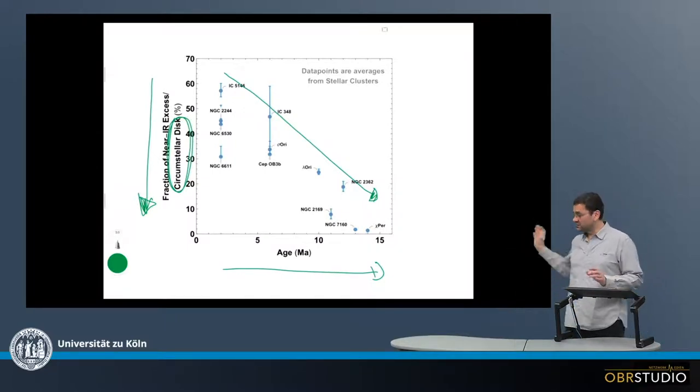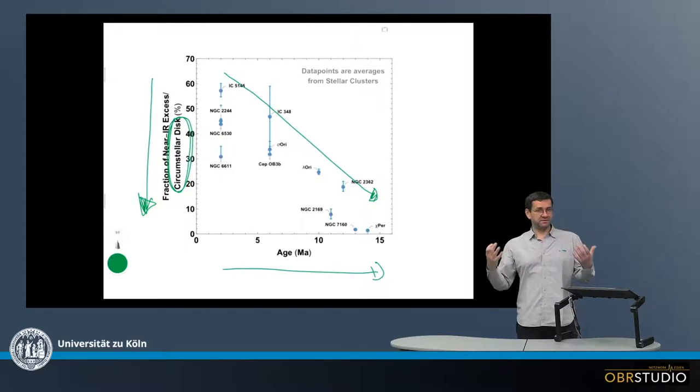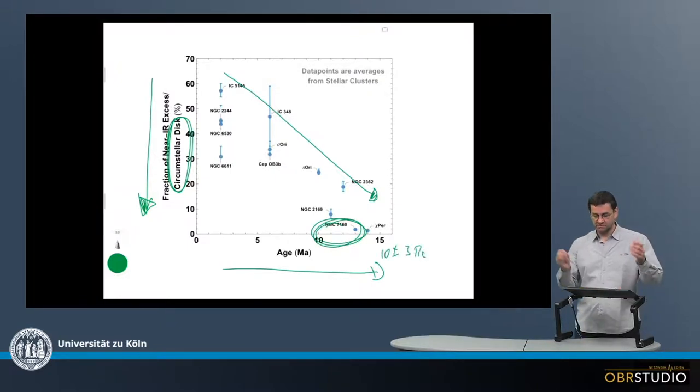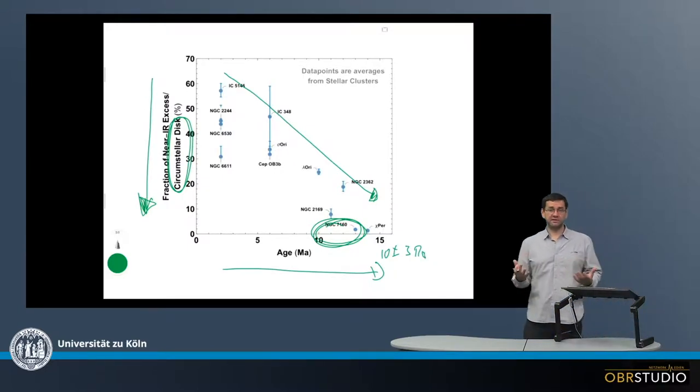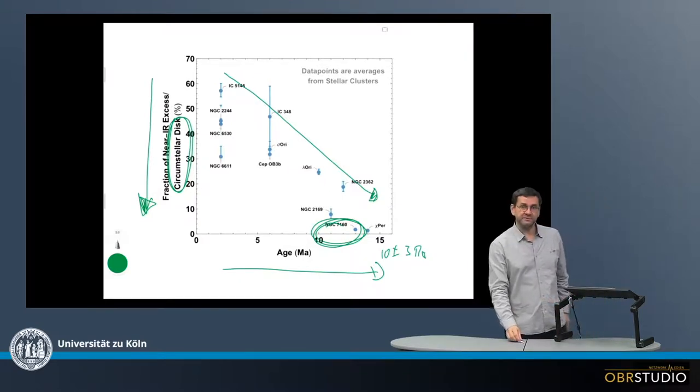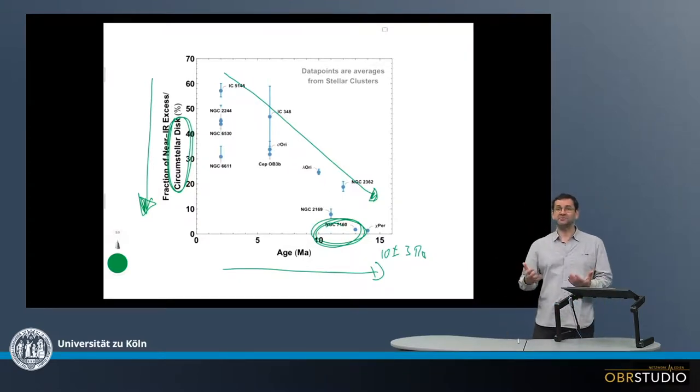So with increasing age, the stellar disk dissipates, and after about something like maybe 10 plus minus 3 million years or something like that roughly, the disk is completely dissipated. That is quite an interesting correlation, quite an important correlation here. That there seems to be a certain lifetime for these kind of protoplanetary disks.